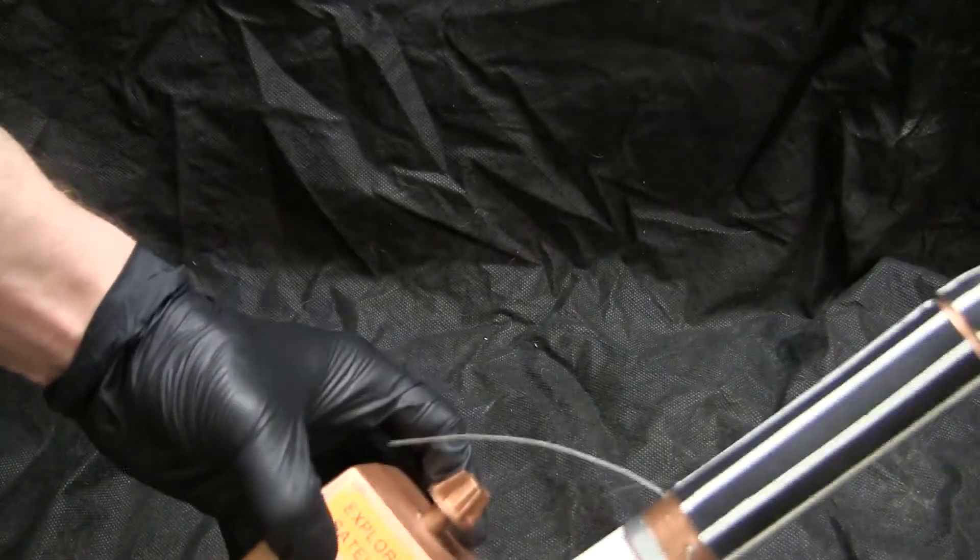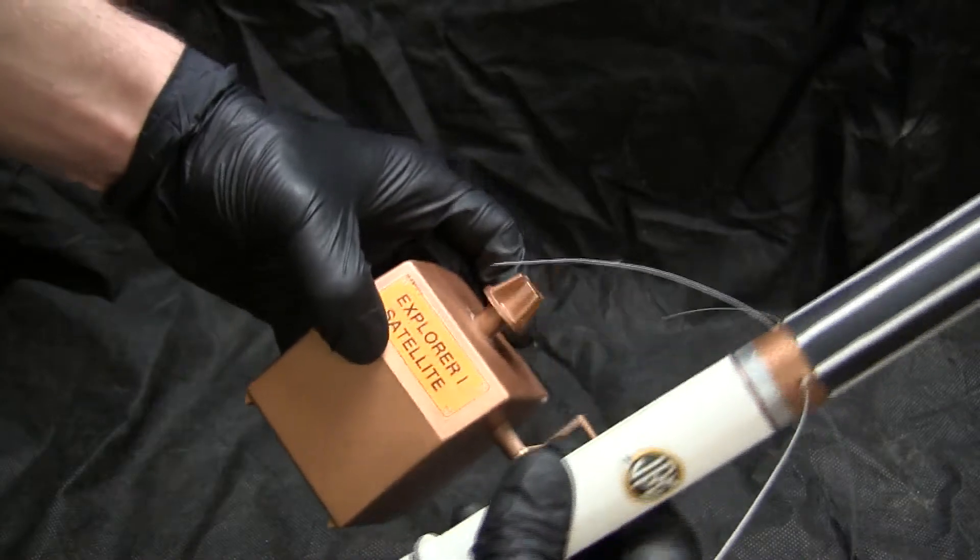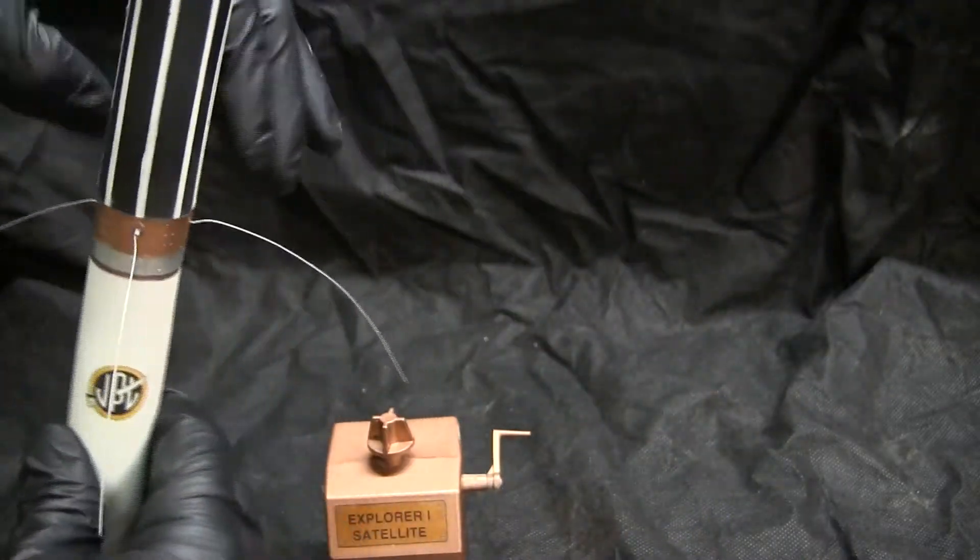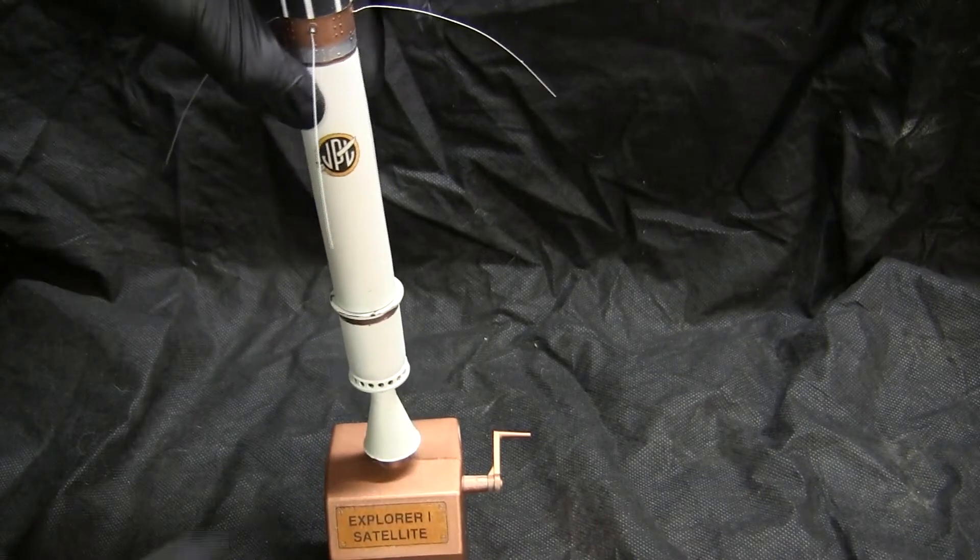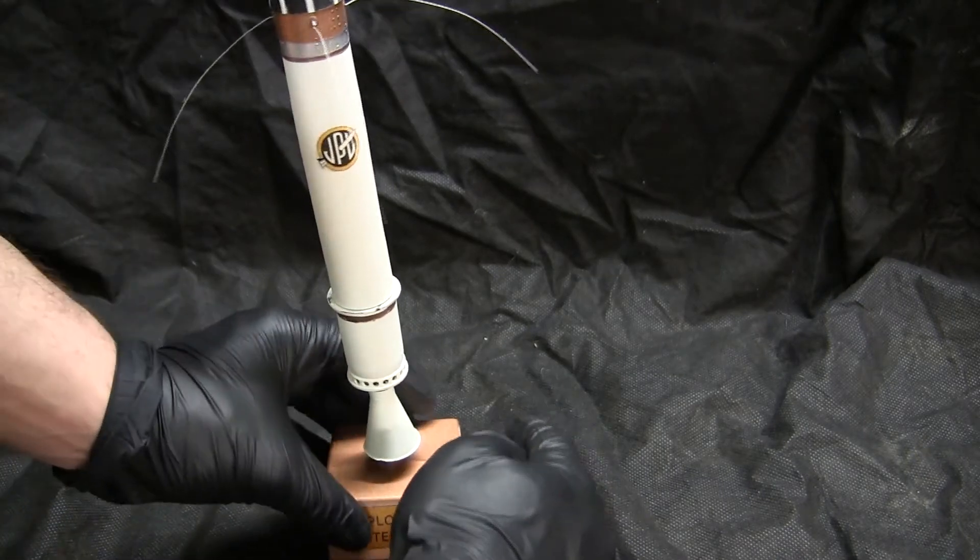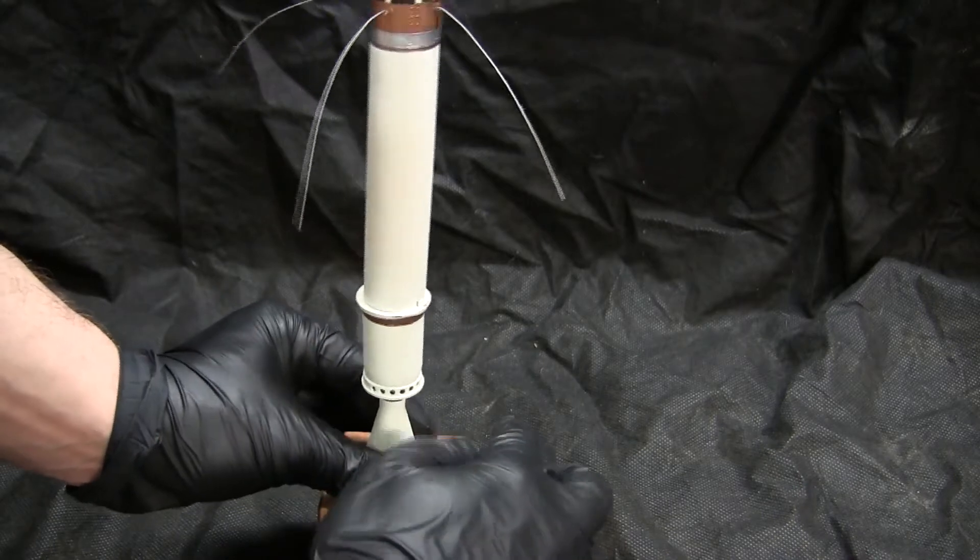The stand has a small lever where if you crank it, you can spin the satellite around. However, to do that you would need to fully glue the model to the stand, otherwise it will want to topple on you.